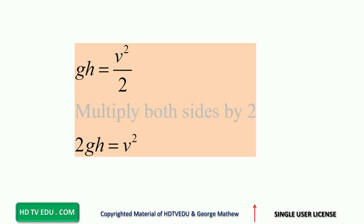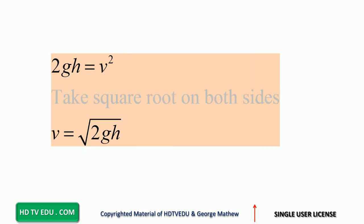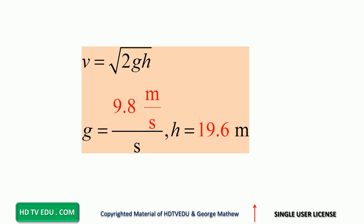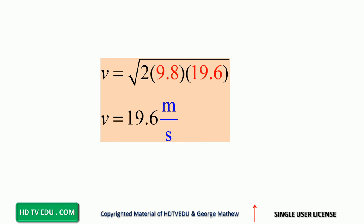We see there is a division by two, so multiply both sides by two: 2gh equals v squared. Taking the square root on both sides gives v equals the square root of 2gh. Substituting h = 19.6 and g = 9.8, we get v equals the square root of 2 times 9.8 times 19.6.